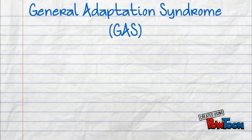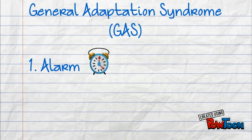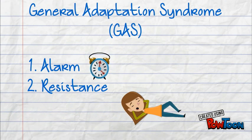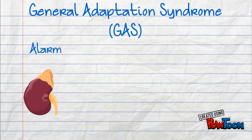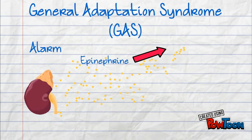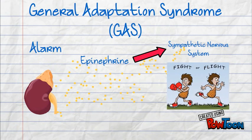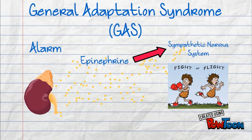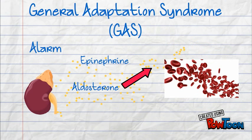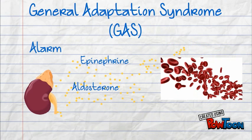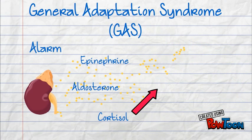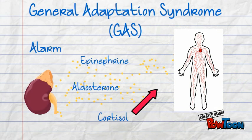So how does the General Adaptation Syndrome work? When an individual encounters a stressful situation, they undergo the alarm stage, followed by the resistance stage, and then finally the exhaustion stage. In the alarm stage, the adrenal glands release three hormones: epinephrine, which stimulates the sympathetic nervous system for emergency activity; aldosterone, which maintains a normal blood volume and salt balance; and cortisol, which increases blood glucose for energy.